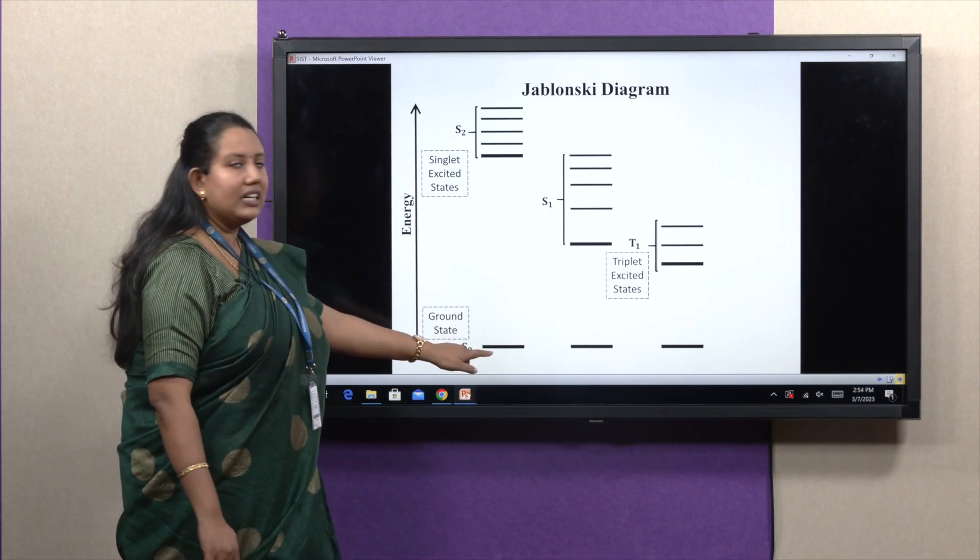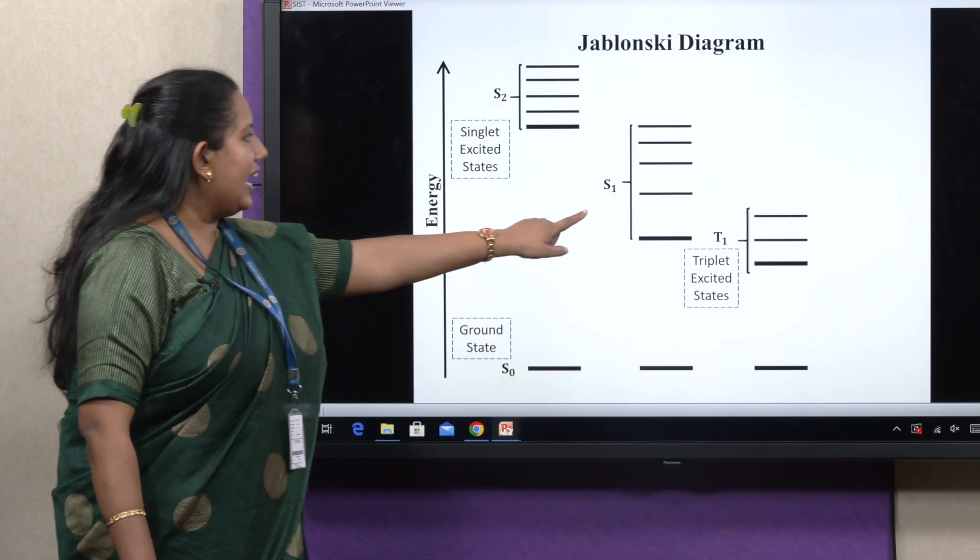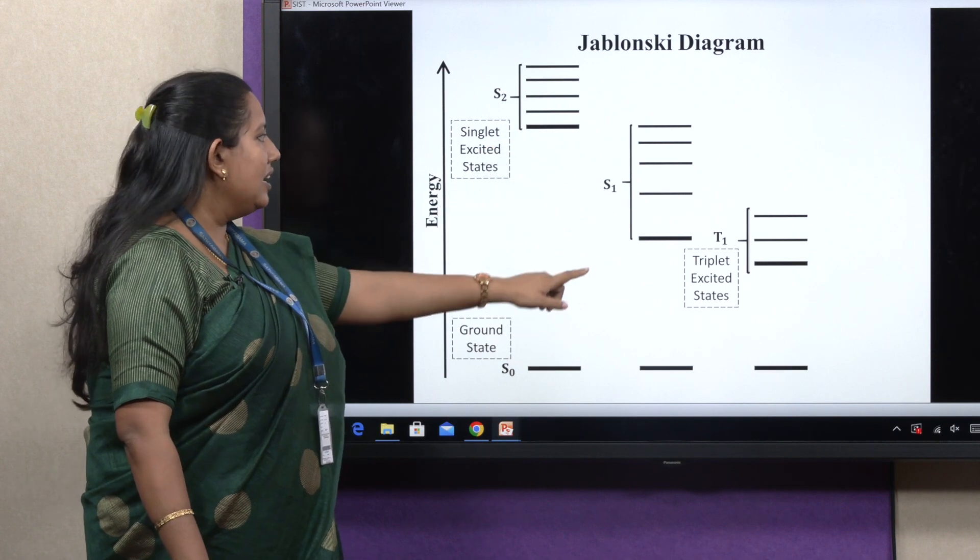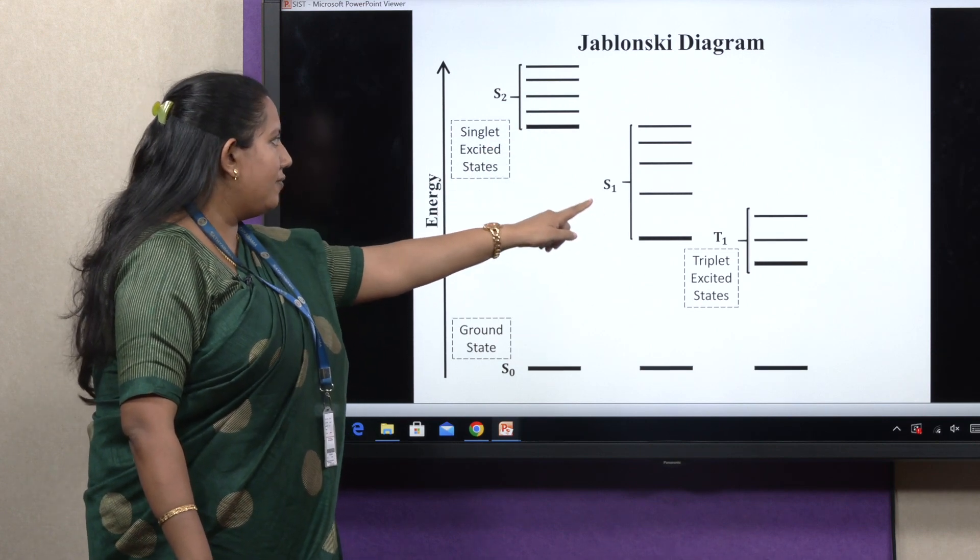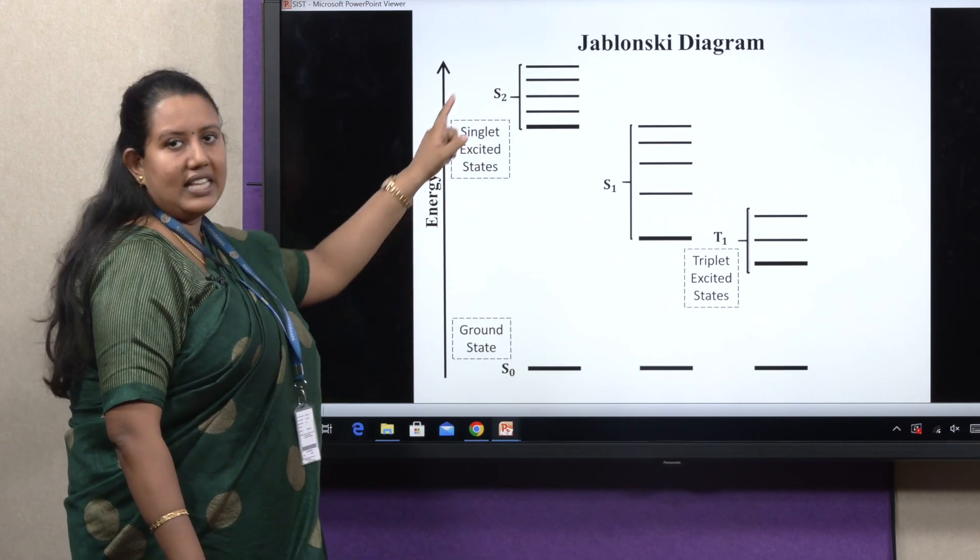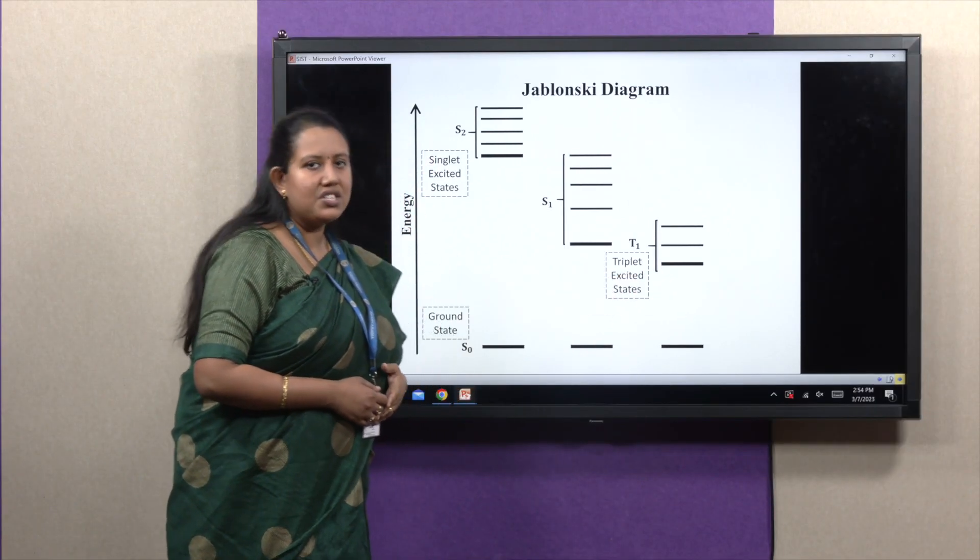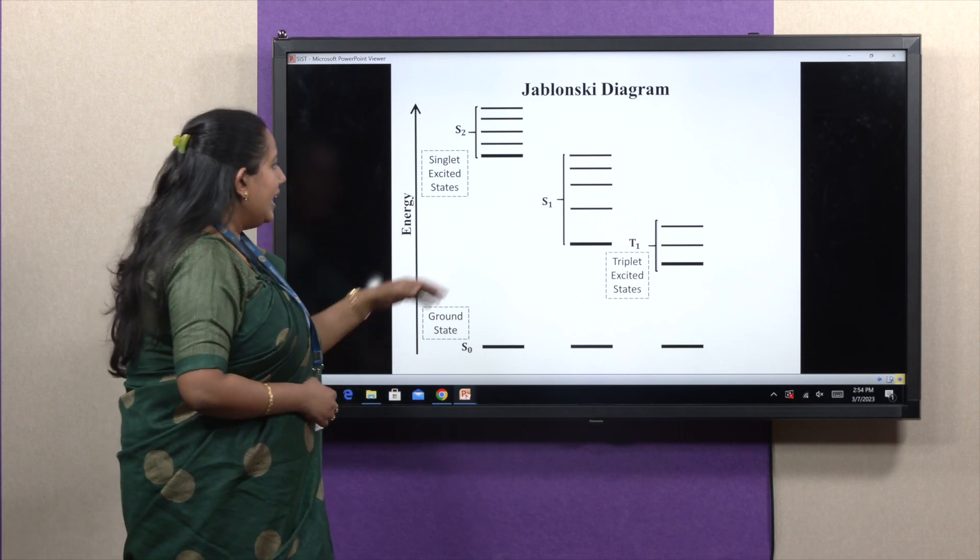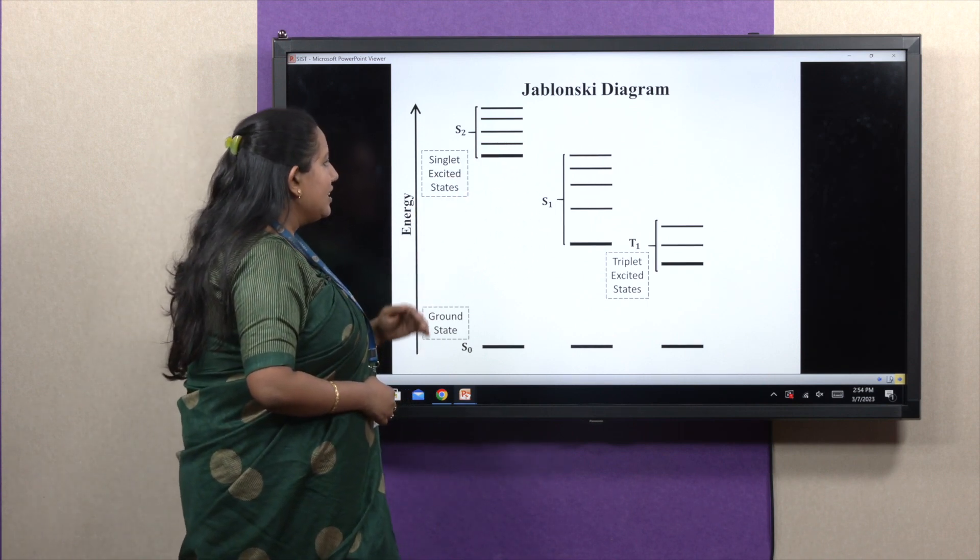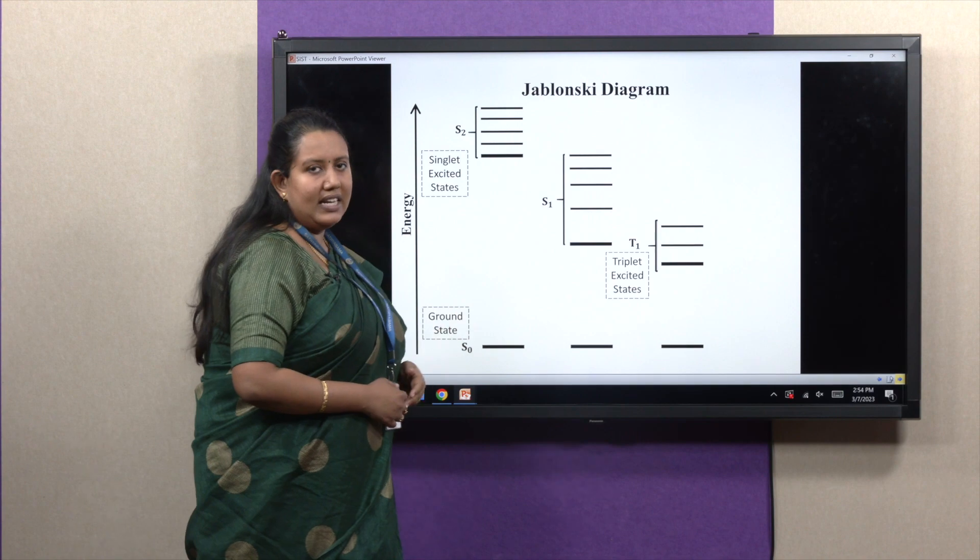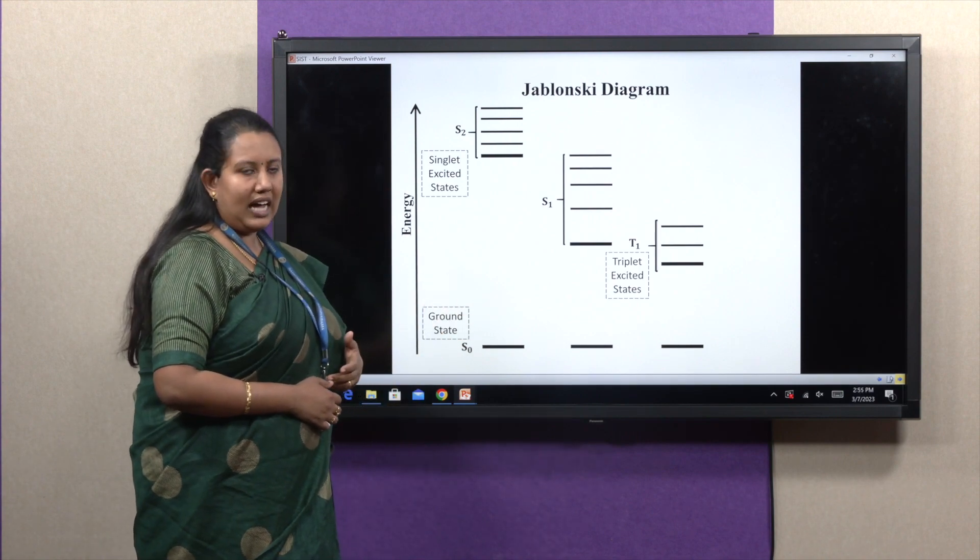Here S0 is the ground electronic state. S1, S2 are the singlet excited states, first singlet excited state and second singlet excited state, where T1 is the first triplet excited state. In between any electronic state, you can see there are various vibrational levels present.